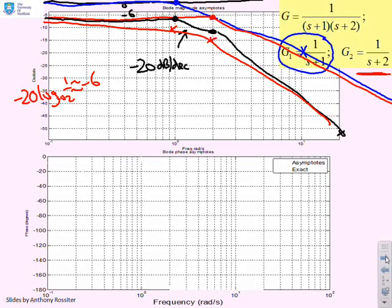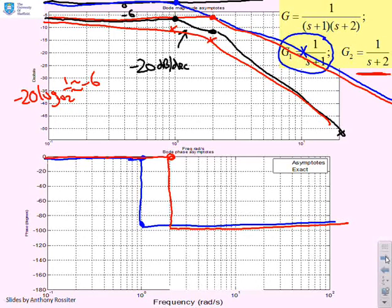What about the phase plots then? Well, for 1 over s plus 1, the phase for low frequencies is 0 until I get to 1. And then I go down and the phase for high frequencies is minus 90. If I do 1 over s plus 2, I get 0 degrees for low frequencies out to omega equals 2 and minus 90 for high frequencies. Again, I've not put the corrections in particularly here. But if I do the exact sketches, so we can see roughly where we're at, then what you'll see is the blue sketch is something like that. And the red phase is going to be something like that.